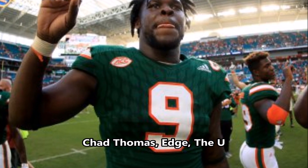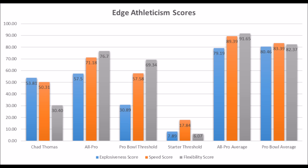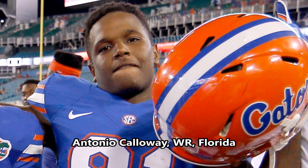Then we get to Chad Thomas, edge out of the University of Miami. His production data is poor: 32.84 solo tackle score, 33.45 sack score, and 38.45 TFL score — does not hit the all-pro threshold, Pro Bowl threshold, or come close to those averages. His athleticism is also lacking: 53.81 explosive lower body strength, 50.31 speed score, and 30.40 flexibility — the flexibility was downright dreadful, especially given that pro day testing is usually friendly. Overall, he doesn't look like an all-pro or Pro Bowl player. He could become a long-term starter, but would have to be an outlier to exceed what his data shows.